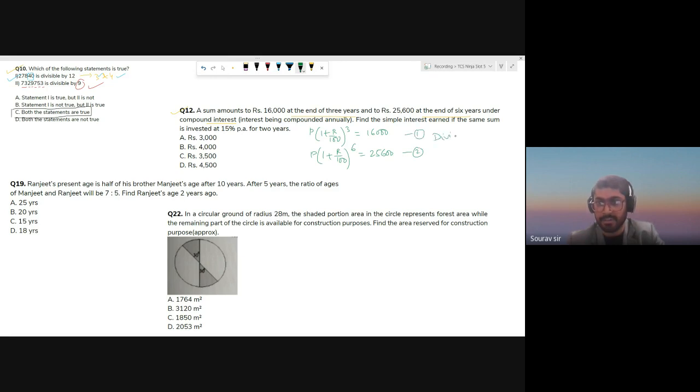Divide equation 2 by 1. You will get 1 plus r by 100 cubed equal to 1.6. For this division on the right side, use the onscreen calculator. Now use this value in this equation that will give you P times 1.6 equal to 16,000, which means you're going to get P equal to 10,000. So you have calculated the principle.